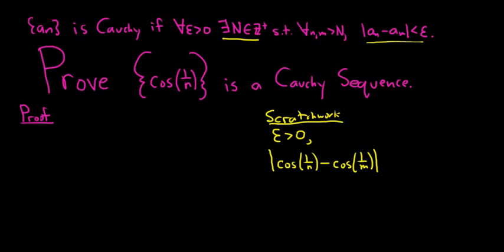So the idea here is to recall an identity from trigonometry. If you have the cosine of u minus the cosine of v, that's equal to negative 2 sine of u plus v over 2 times sine of u minus v over 2.